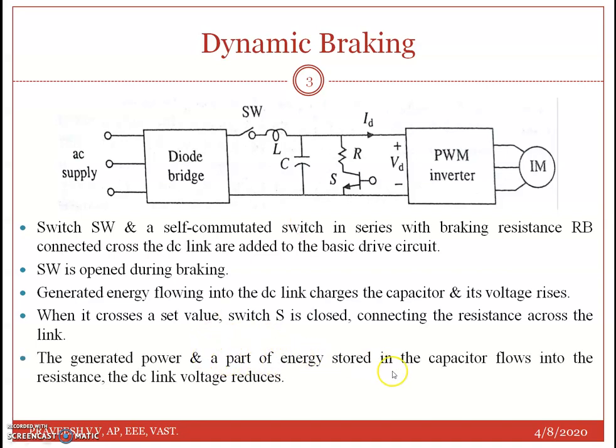A part of energy stored in the capacitor flows into the resistance and the DC link voltage reduces. By closing and opening switch S based on the value of DC link voltage, the generator energy is dissipated in the resistance, giving dynamic braking.